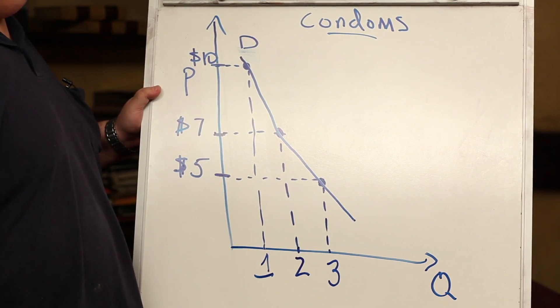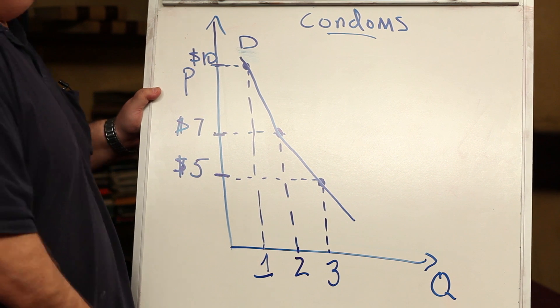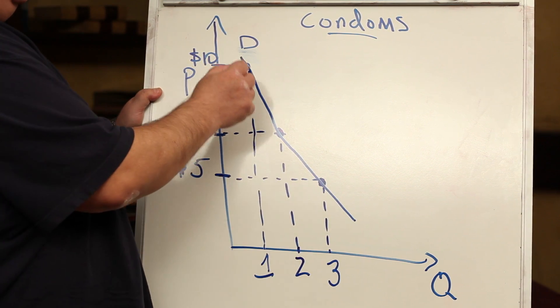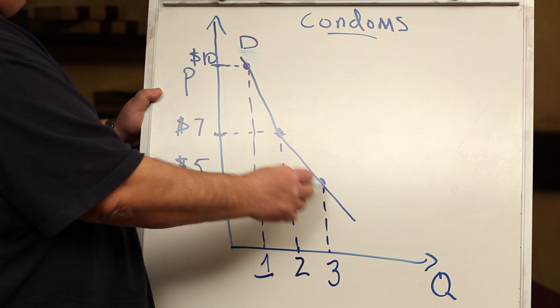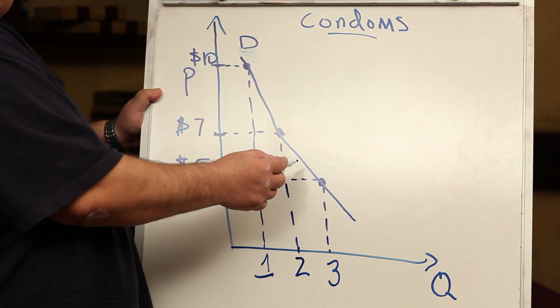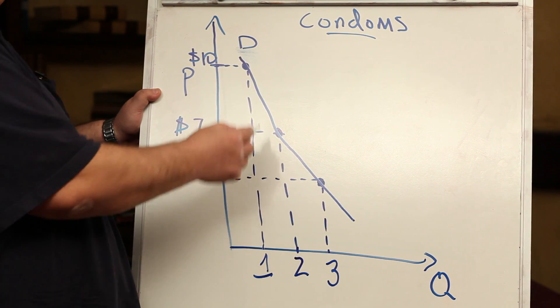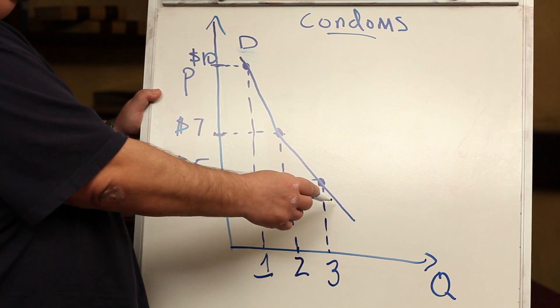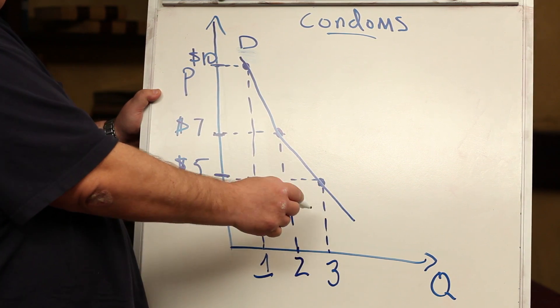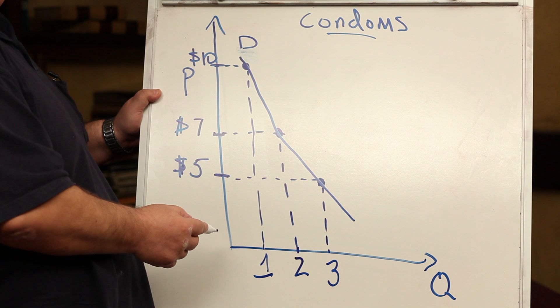Here, let's look at this demand curve for condoms. Notice how it has a negative slope. It doesn't have to be a straight line, maybe in your textbook it is, but the most important thing is that it has a negative slope, showing the law of demand as an inverse relationship.